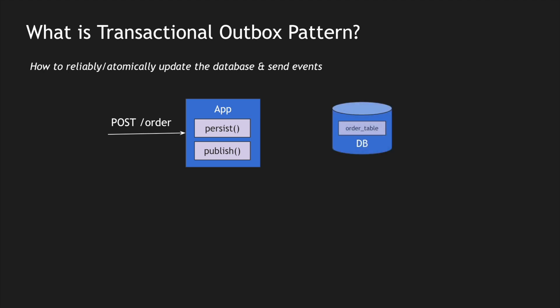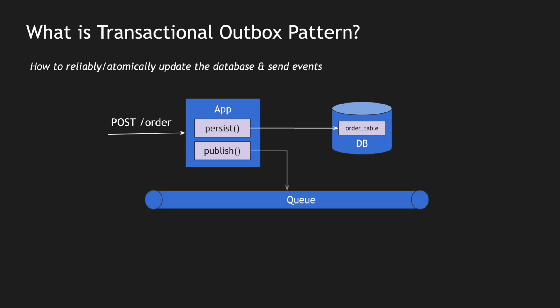We have a database for persistence. I have an order table, so once we hit the persist method it goes and adds the order into the order table. Once the order table commits the transaction, the request moves to the publishing part. Publish will push the message or event into the queue where different subscribers can listen and consume them.